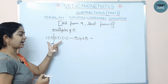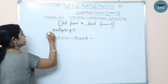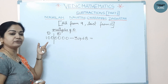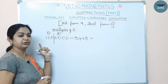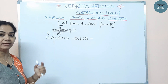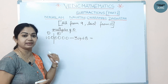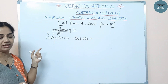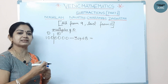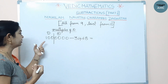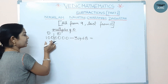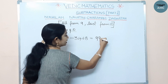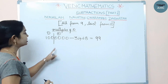The minuend is now split into two parts. For the first part, you have to subtract one — reduce it by one. This uses the sub-sutra 'Ekanyunena Purvena,' meaning reducing one in the preceding term. So the first part becomes 100 - 1 = 99.